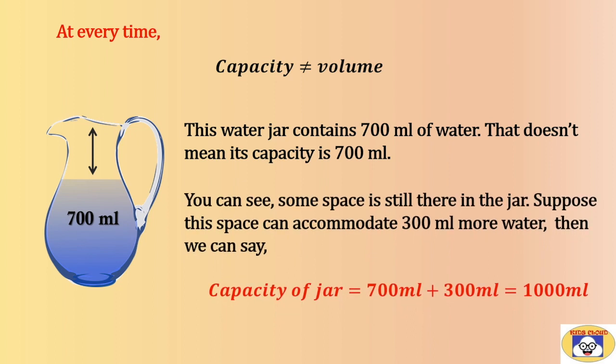You can see some space is still there in the jar. Suppose this space can accommodate 300 ml more water, then we can say capacity of jar is equal to 700 ml plus 300 ml, that is equal to 1000 ml.